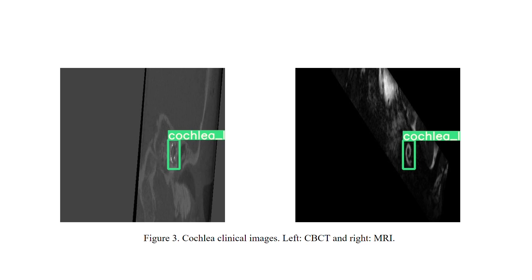CBCT focuses on visualizing bones, while MRI focuses on soft tissues in the body. Due to the small size of the cochlear and the low resolution of medical images, it is challenging to detect.